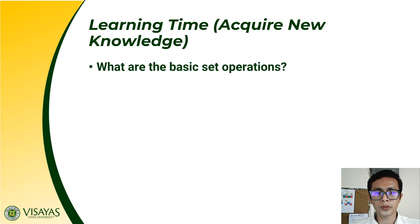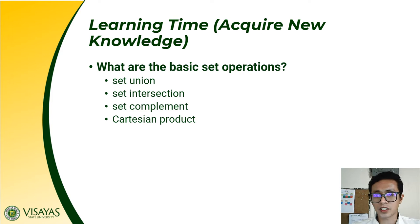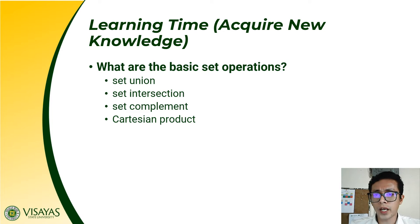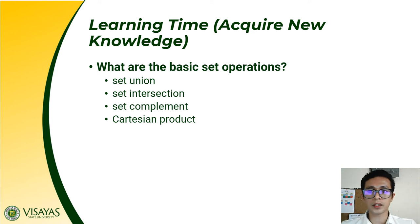The four basic set operations are: set union, set intersection, set complement, and Cartesian product. These set operations answer the question of when you want to create a set containing elements from both sets, or a set containing only the elements common to each set — that pertains to set union and set intersection. You also have set complement and Cartesian product.